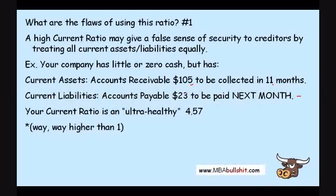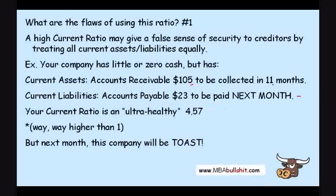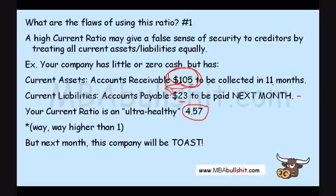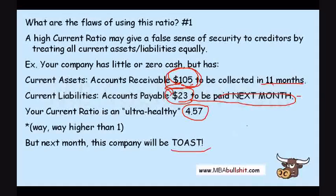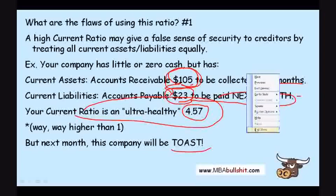This indicates that your company is very healthy. But actually, next month, this company will be toast. You have a very high current ratio because you have more than enough current assets, but these current assets will only be converted to cash 11 months from now — too late to pay the current liabilities due next month. Your company will have a cash flow problem even with a current ratio of 4.57.